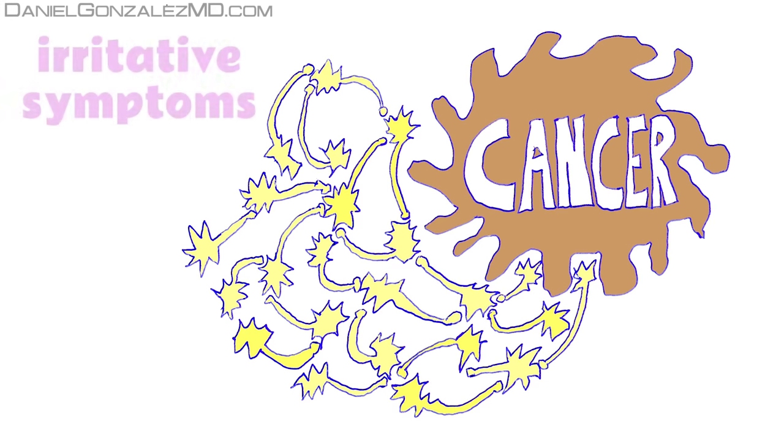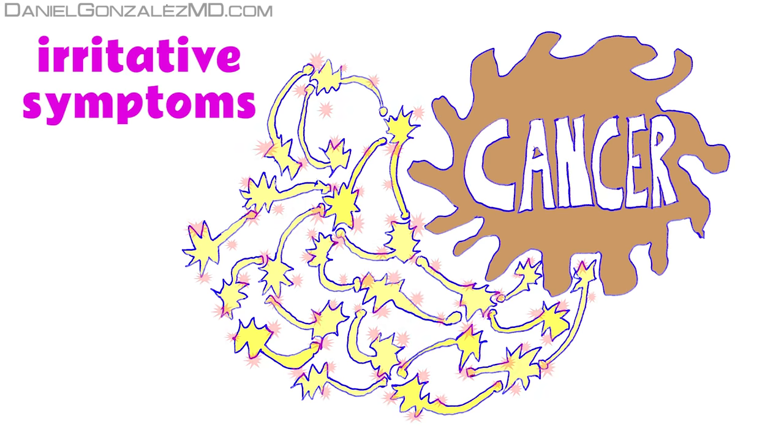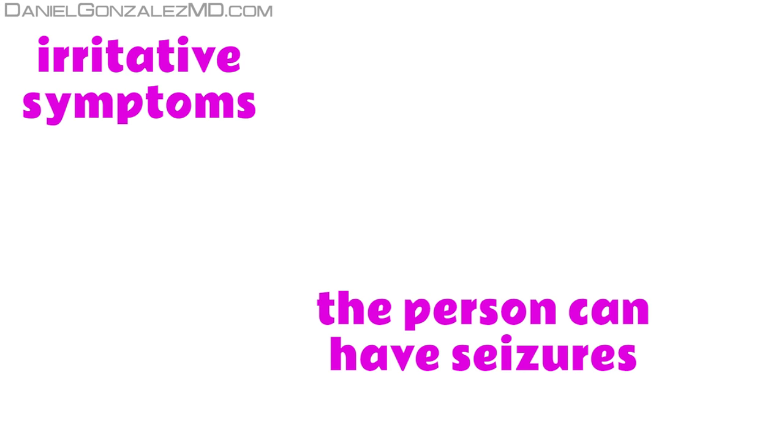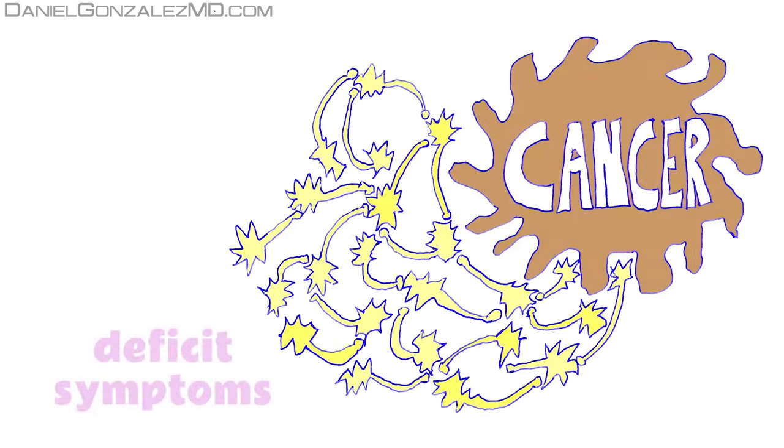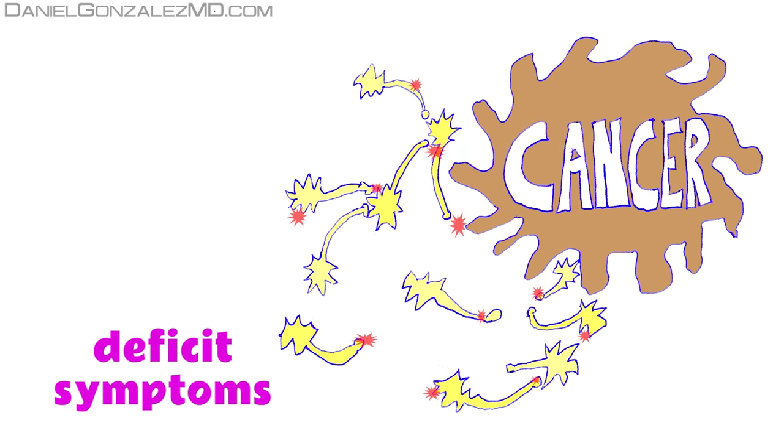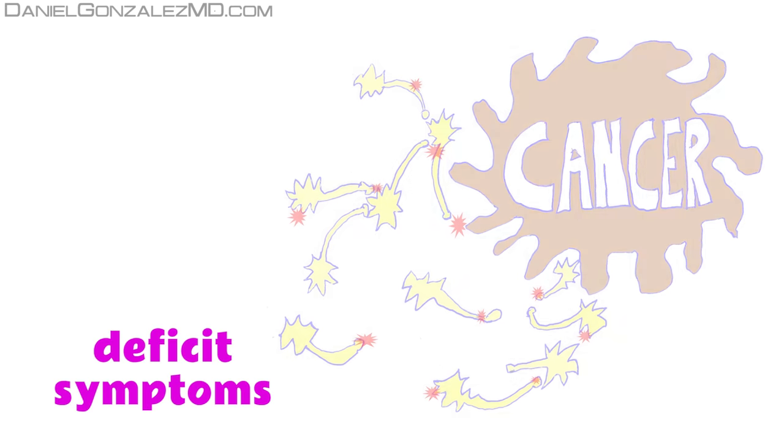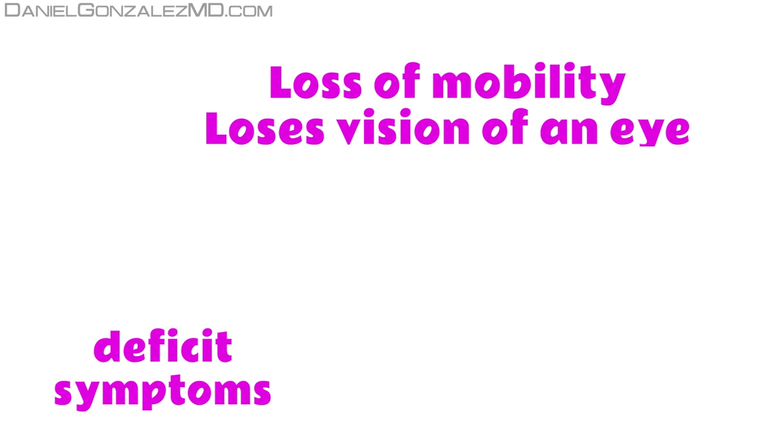Irritative symptoms, in which neurons fire uncontrolled flashes. The person can have seizures. Or deficits symptoms, in which neurons stop working and their work is not done. The person can have loss of mobility, can experience loss of vision for an eye, or loses sensitivity.